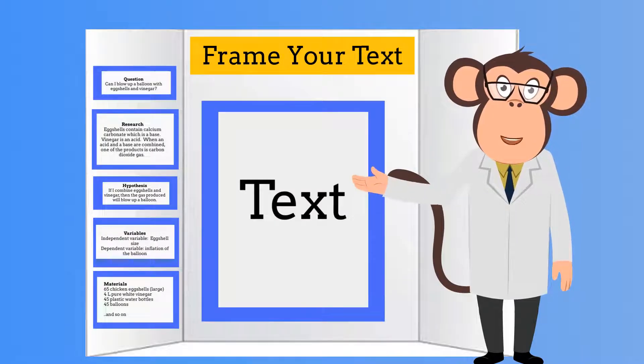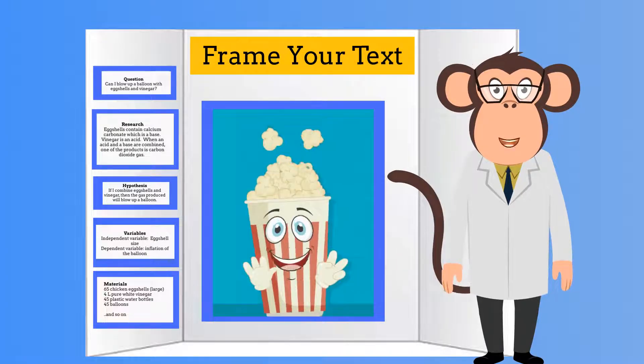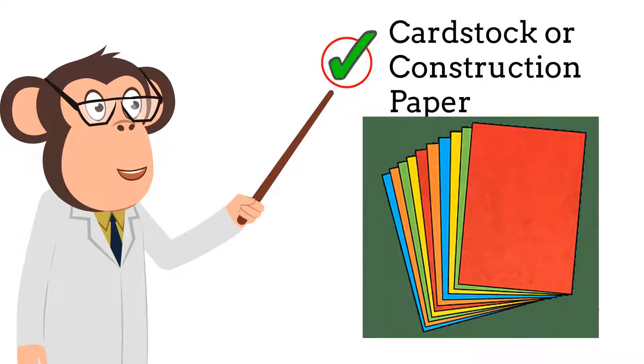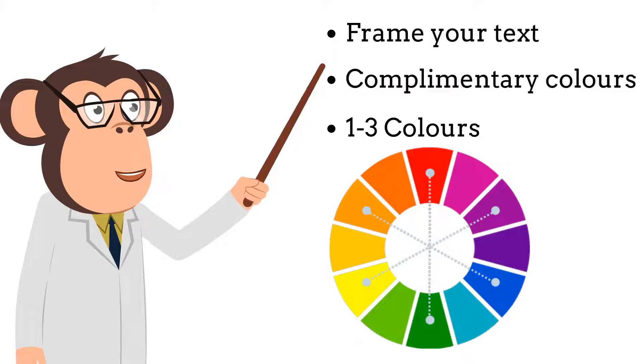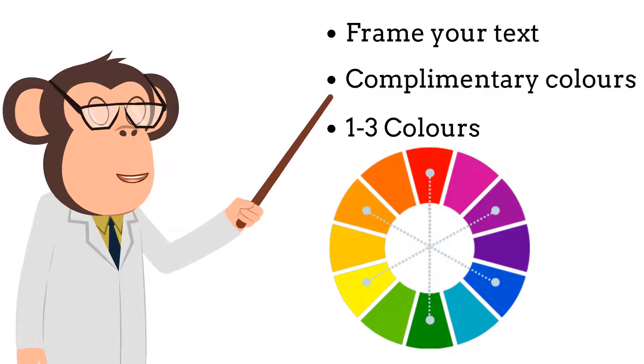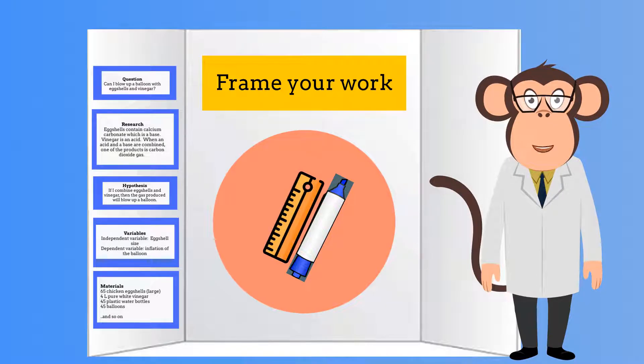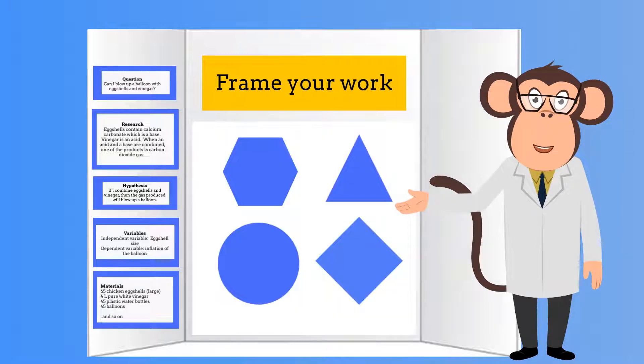It is recommended that you frame your printed information. Framing the text highlights your sections and makes them pop off the display board. This can be done by gluing your text sheet onto colorful cardstock or construction paper. Suggested is that you choose complementary colors and stick to just a few colors. Colored markers and a ruler can also be used to frame your work. There doesn't seem to be a fixed rule that sections must look like rectangles. However, if you add other shapes, they shouldn't distract from your work.